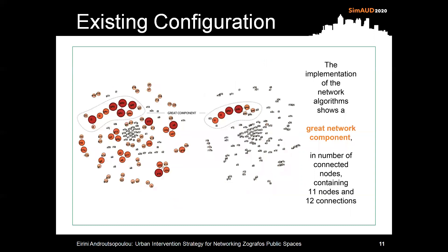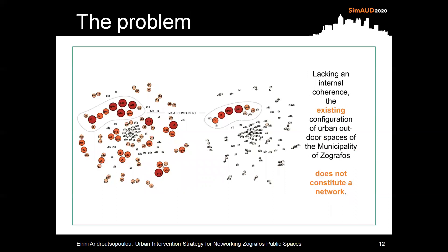The application of network algorithms shows a great network component in number of connected nodes, which isn't enough for the existing configuration to be defined as a network. Apart from this component, it is a configuration of 24 small subnets, each containing 2 to 4 nodes.